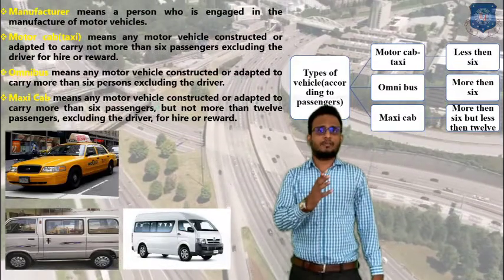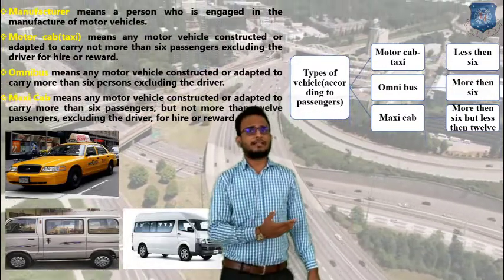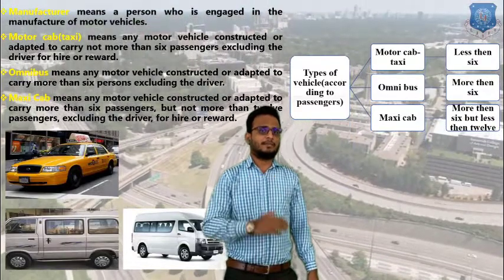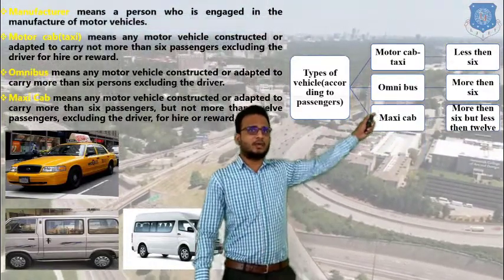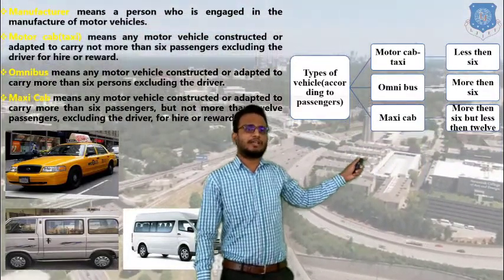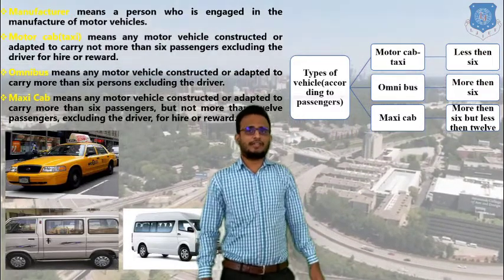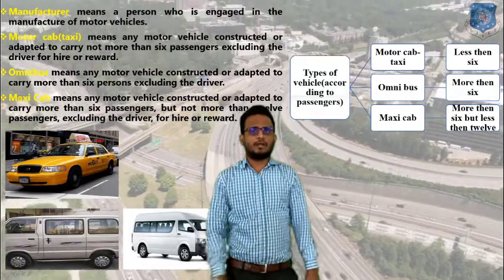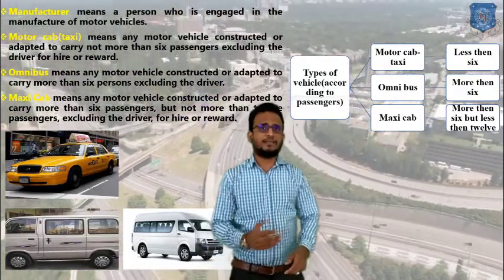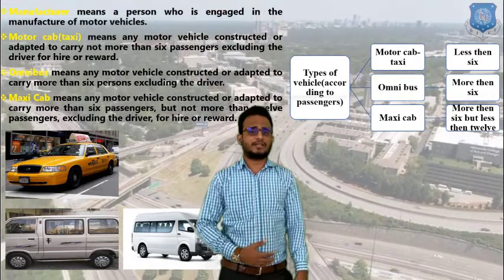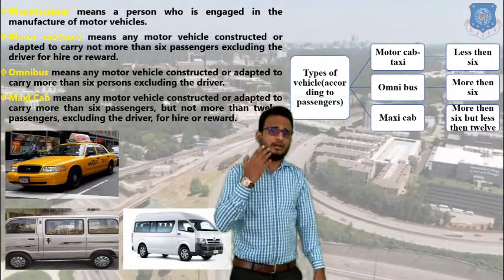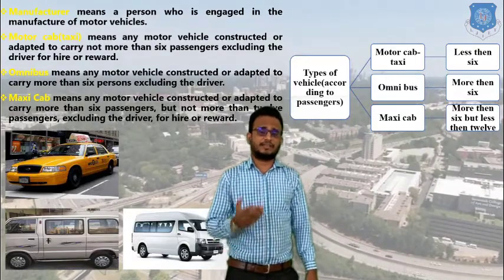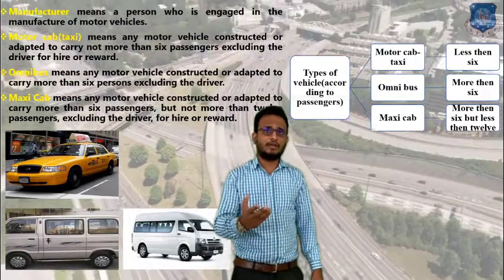In the diagram you can see: Motor Cab or Taxi carries less than six passengers; Omni Bus carries more than six; and Maxi Cab carries more than six but less than twelve. These three classifications of vehicles according to passengers are frequently asked in TTO and RTO exams.